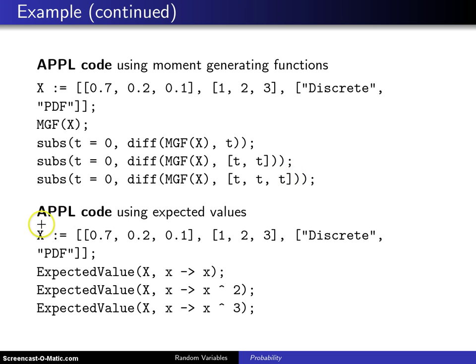You could have also written this in APPL in the following fashion. X gets defined in exactly the same way, but instead of calculating a moment generating function, you can use the expected value function. When you find the expected value of X, you get 1.4. When you find the expected value of X², you get 2.4. And when you find the expected value of X³, you get 5.